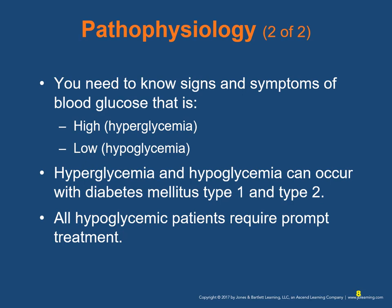Hypoglycemia can develop if a person takes their medication but fails to eat enough food, or if they take too much medication resulting in low blood glucose despite normal dietary intake. All hypoglycemia patients require prompt treatment. Oral glucose paste can be given if the patient is alert and able to protect their airway. Injection of glucose (dextrose) or glucagon can be provided by an ALS provider.